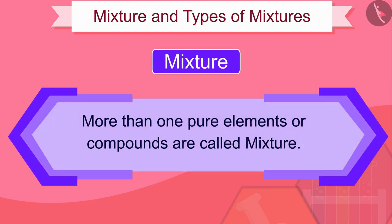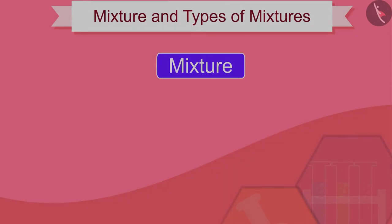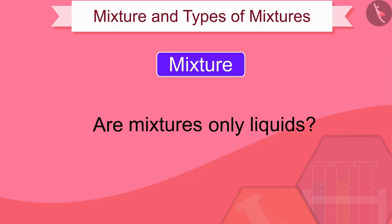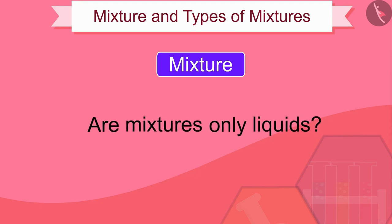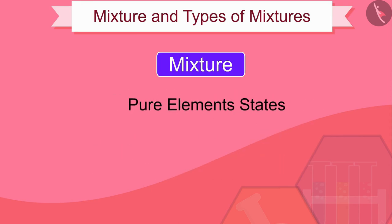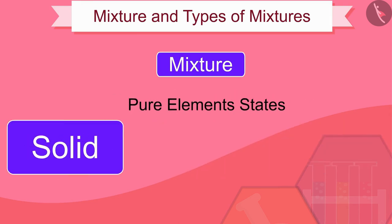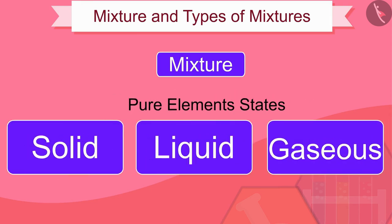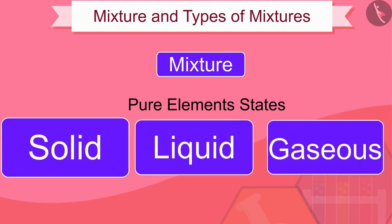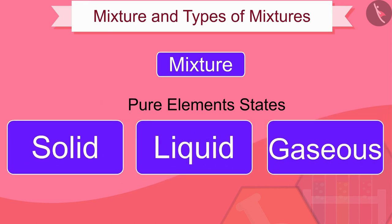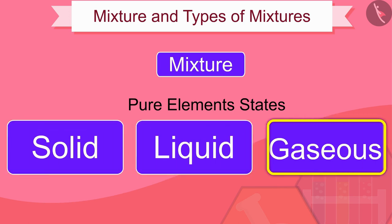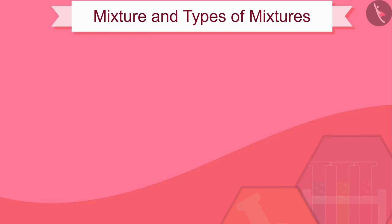Substances like seawater, which consist of more than one pure element or compound, are called mixtures. Are mixtures only liquids? No — pure elements, whether solid, liquid, or gaseous, can be found in any of these states, and mixtures can also be found in any of these conditions.